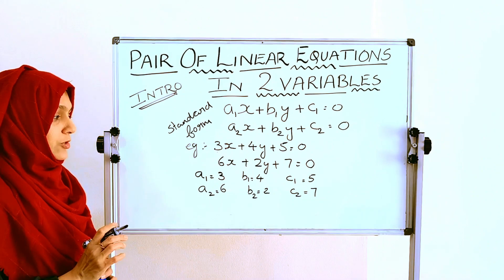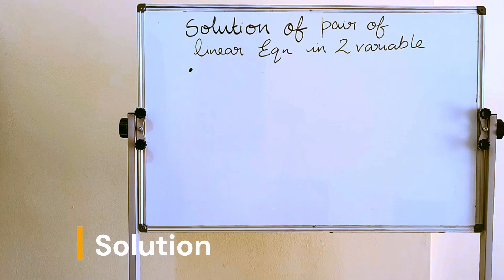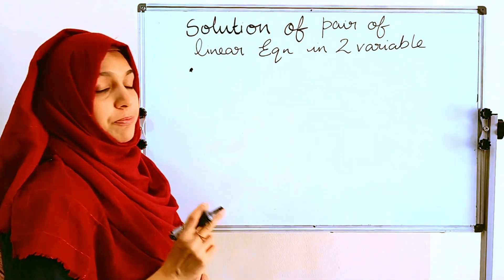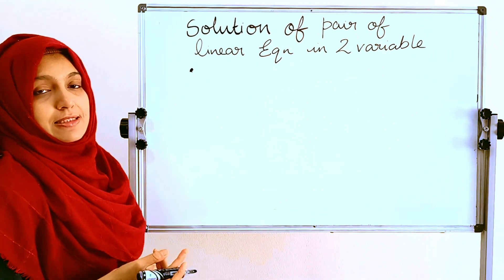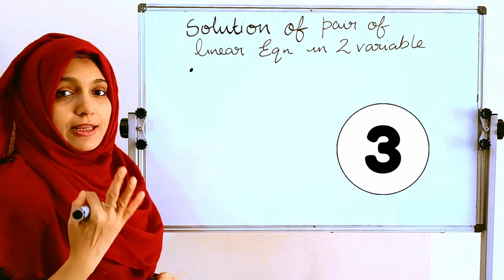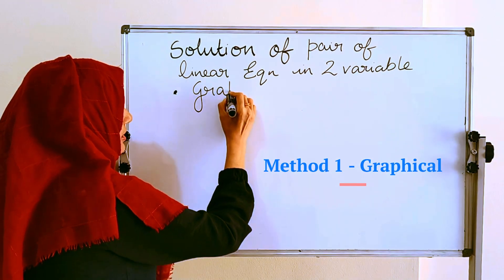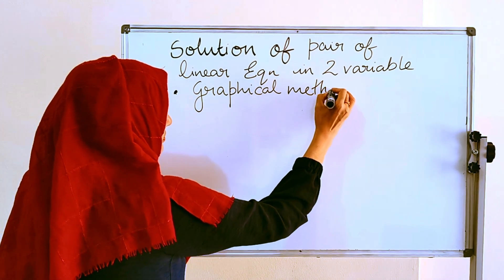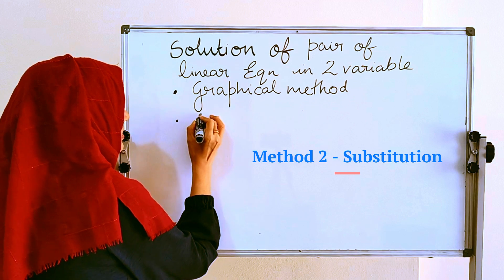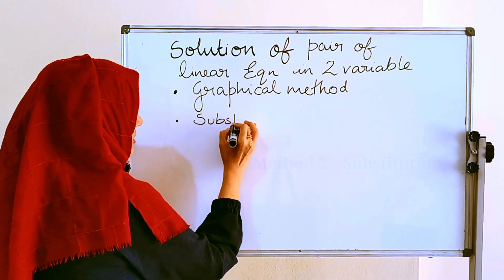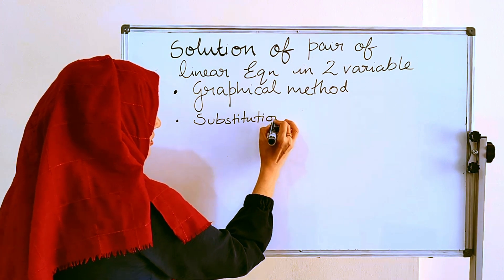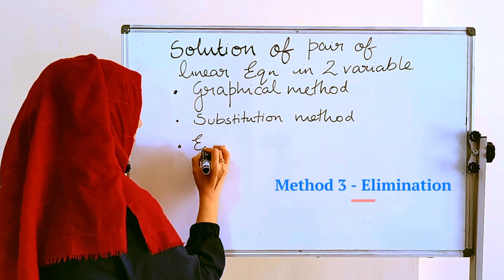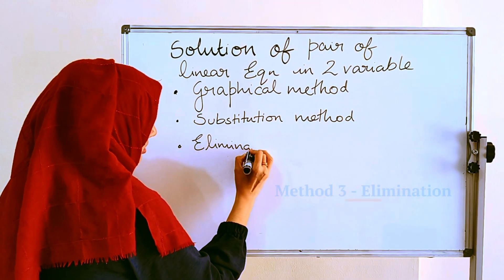So here we find out a1, a2, b1, b2, c1, c2. Next is the solution of pair of linear equations in two variables. There are three methods. The first method is the graphical method, using a graph. The second method is the substitution method. And the third is the elimination method.